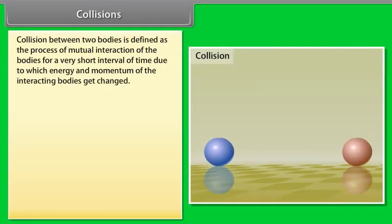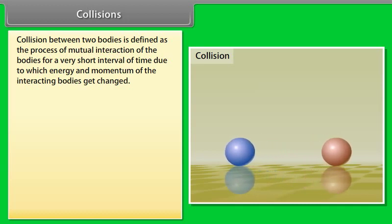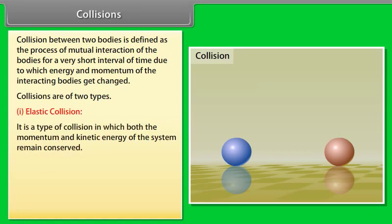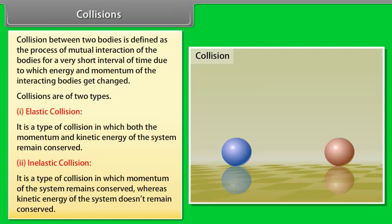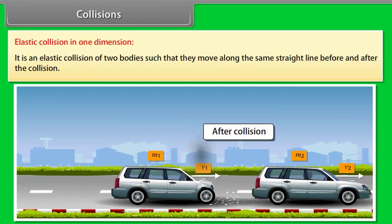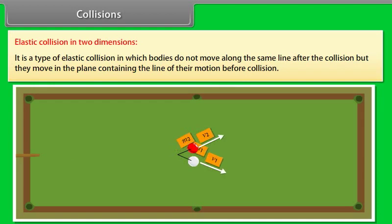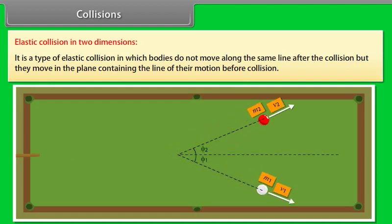Collisions. Collision between two bodies is defined as the process of mutual interaction of the bodies for a very short interval of time due to which energy and momentum of the interacting bodies get changed. Collisions are of two types: Number 1, elastic collision. It is a type of collision in which both the momentum and kinetic energy of the system remains conserved. Number 2, inelastic collision. It is a type of collision in which momentum of the system remains conserved, whereas kinetic energy of the system doesn't remain conserved. Elastic collision in one dimension: it is an elastic collision of two bodies such that they move along the same straight line before and after the collision. Elastic collision in two dimension: it is a type of elastic collision in which bodies do not move along the same line after the collision, but they move in the plane containing the line of their motion before collision.